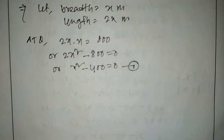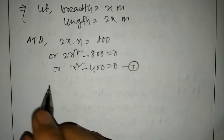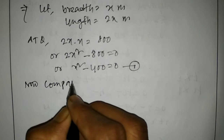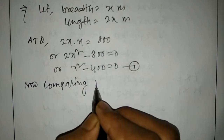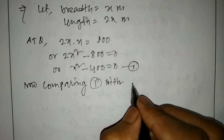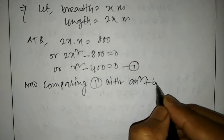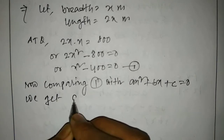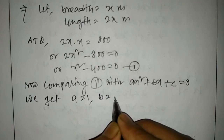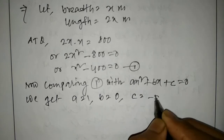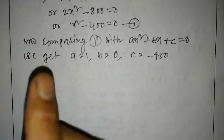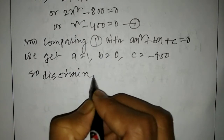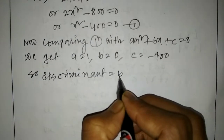We take this as equation number 1. Comparing with ax squared plus bx plus c equals 0, we get a equals 1, b equals 0, and c equals minus 400.